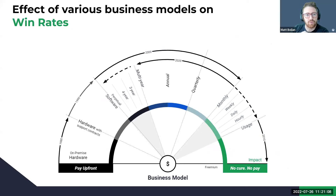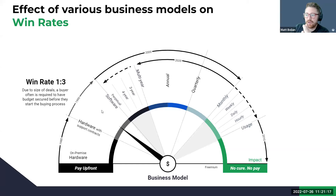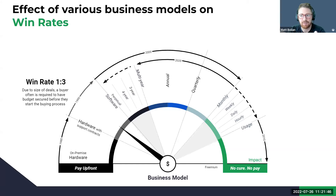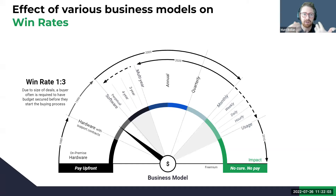Win rates change based on your business model. For an ownership model, the traditional best practice is a one-to-three win ratio. Due to the large scale of these deals — $500K, $1M, $2M, $3M deals — most buyers are going to already have their budget done. Many times these are RFPs. This is where BANT came from: budget, authority, need, timing. BANT does not apply to consumption-based or subscription models in the same way. That's where MEDIC came in, and there's a new one called SPICED — your qualification metrics change based on your business model.